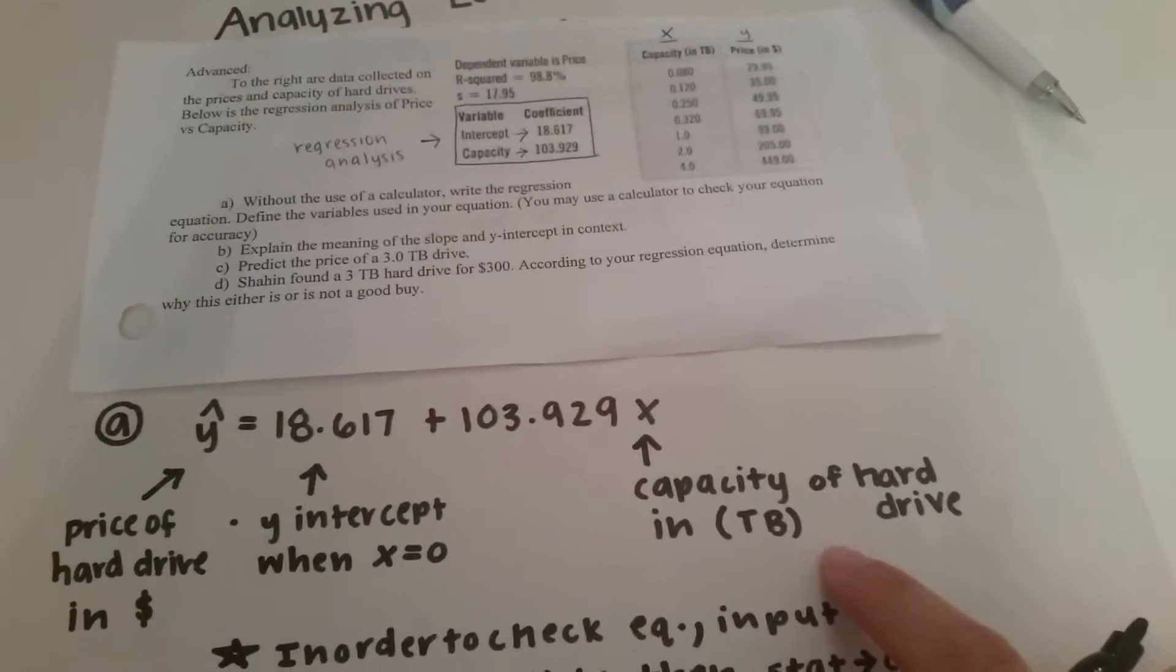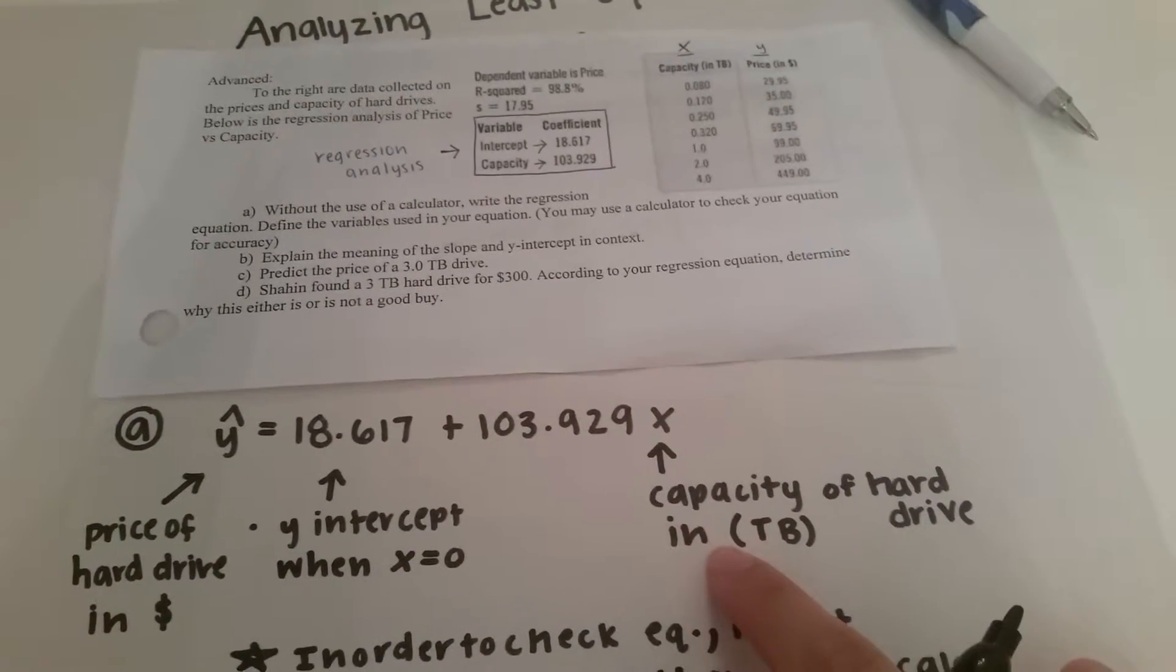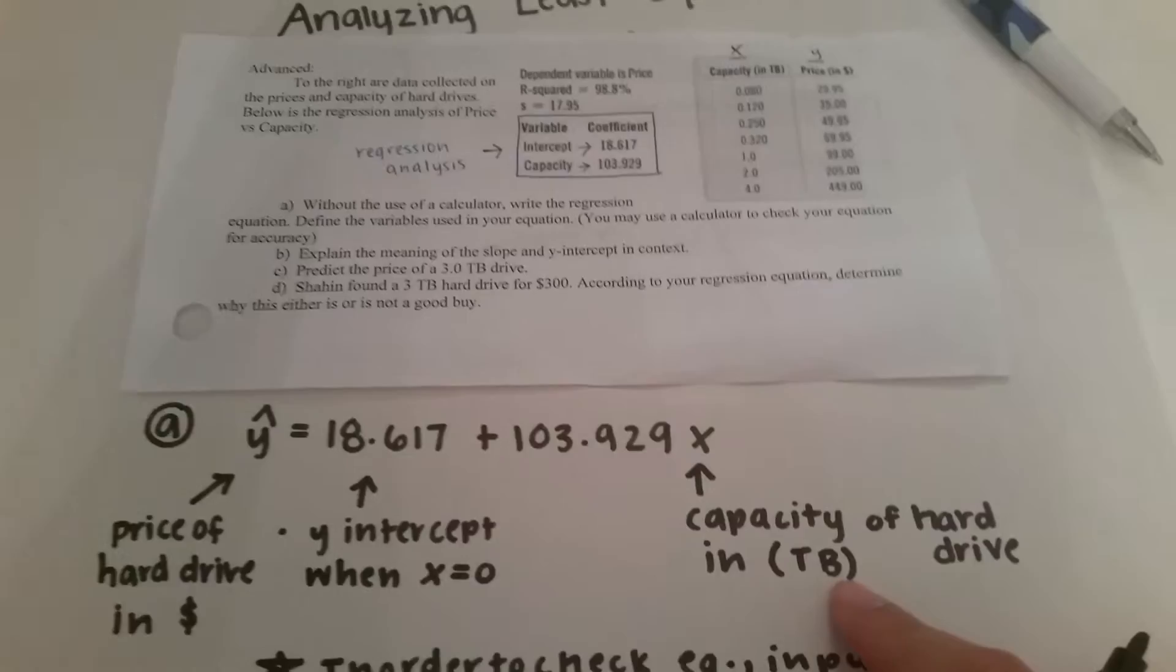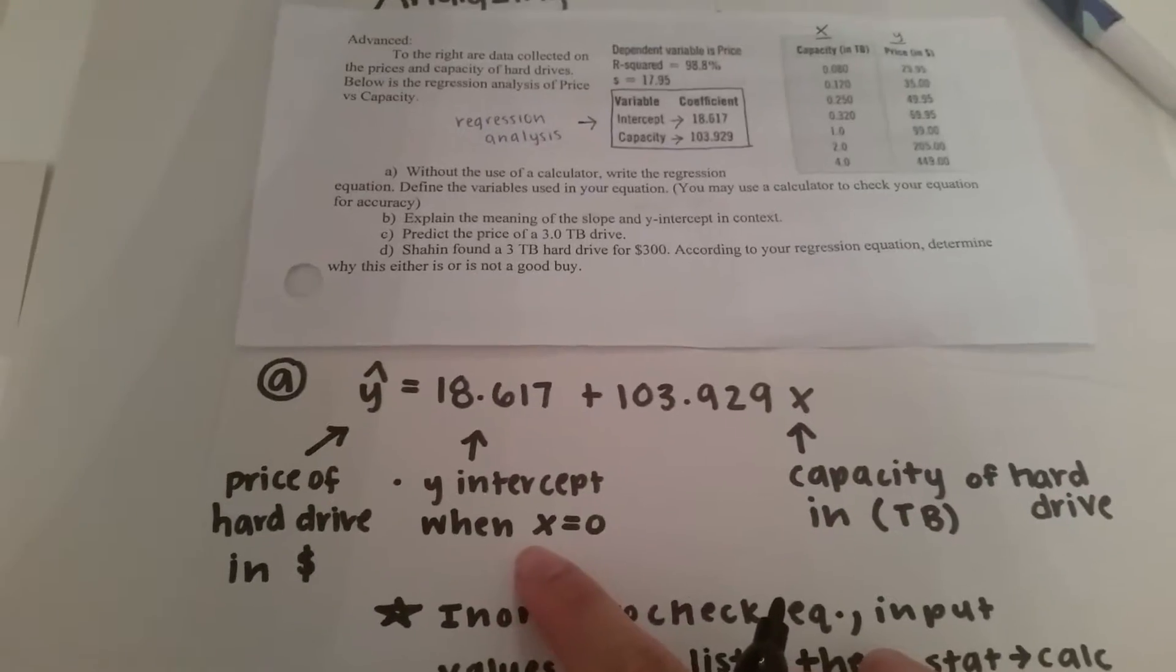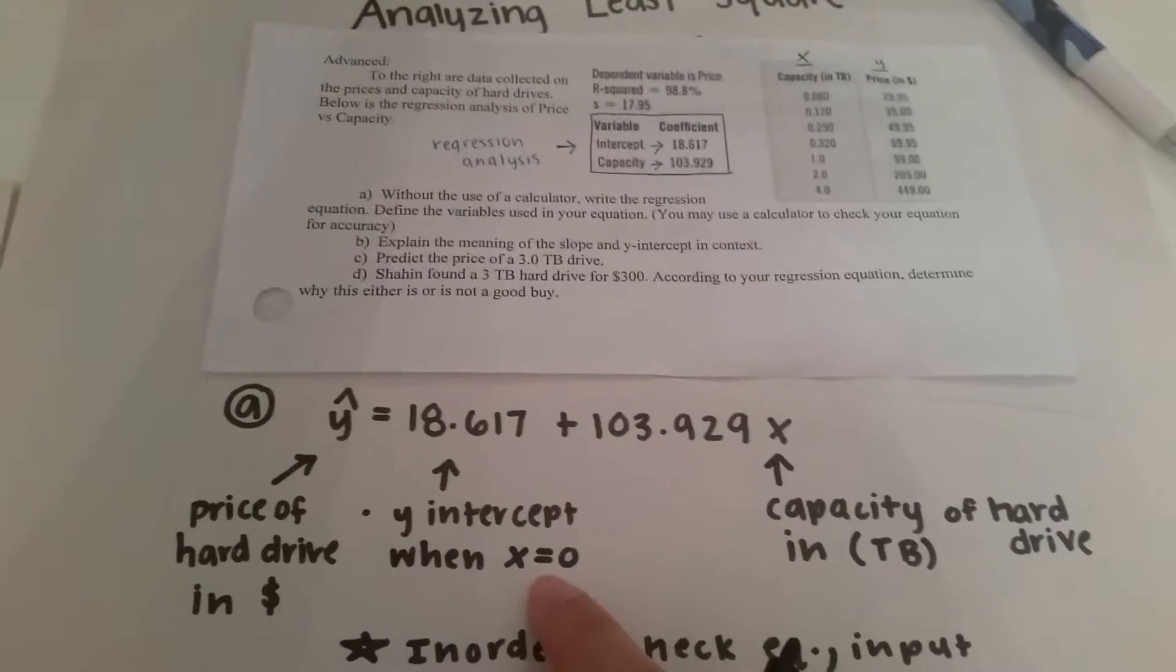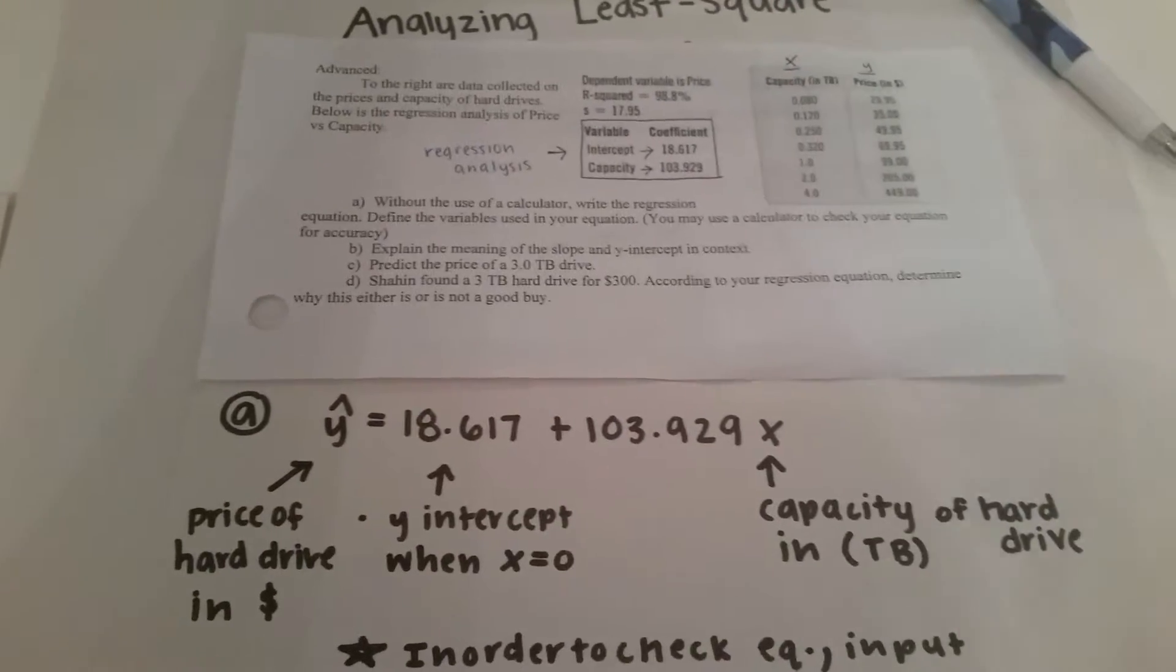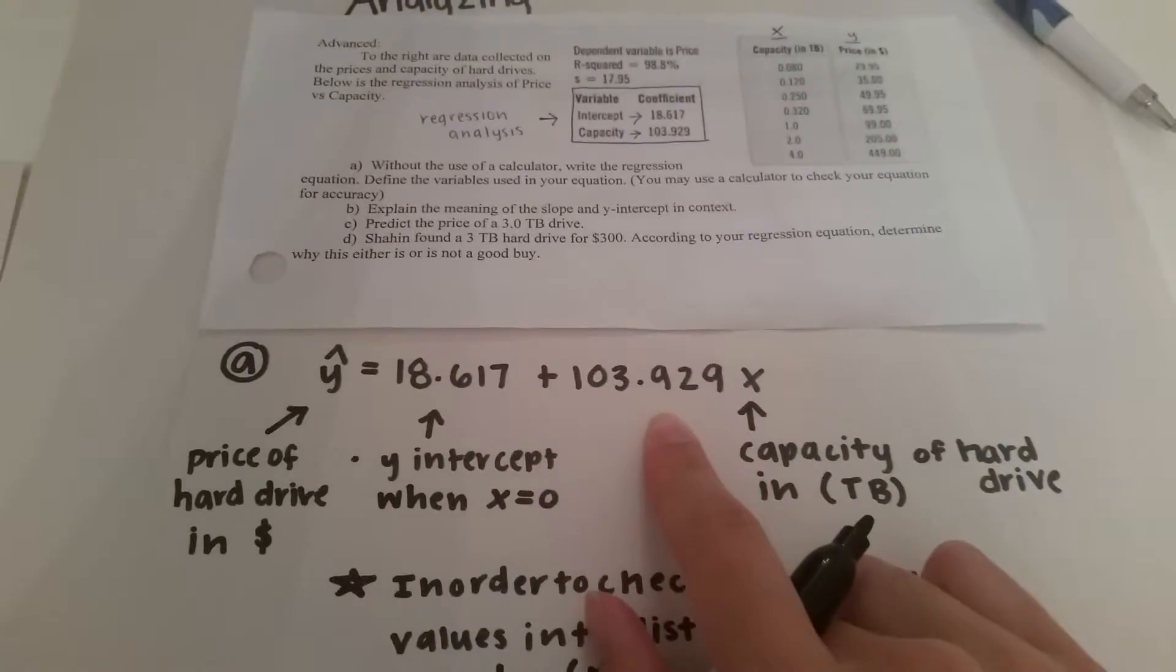The x value is the capacity of the hard drives that is measured in TB. Now 18.617 is the y intercept when the x value is zero or the capacity of the hard drive is equal to zero and this right here is the slope.